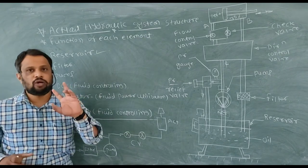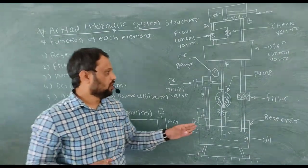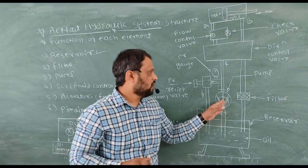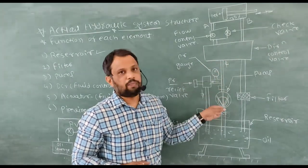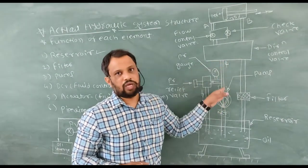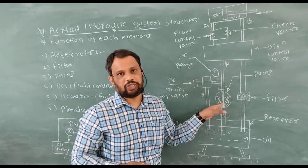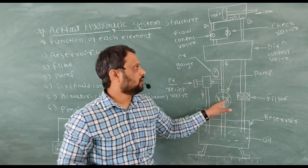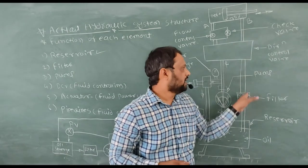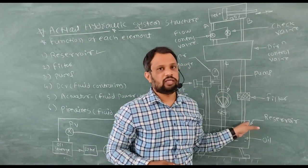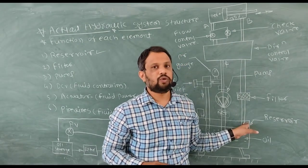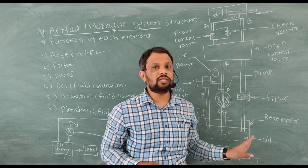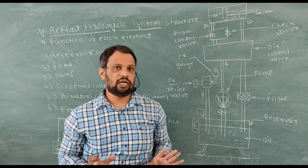There are two pipelines in the hydraulic system. The pipeline from the pump is your pressure line, and the return line is where oil comes from the cylinder back to your reservoir.